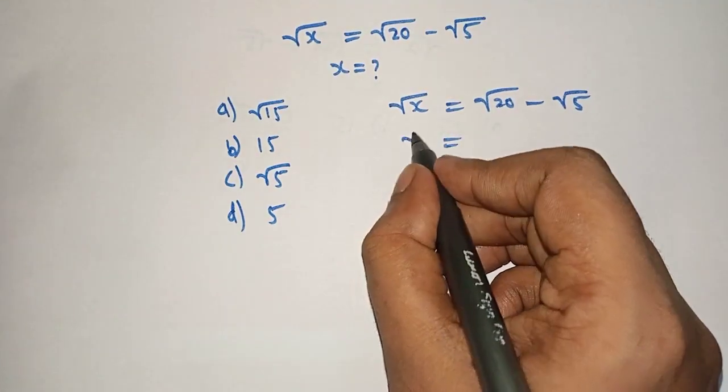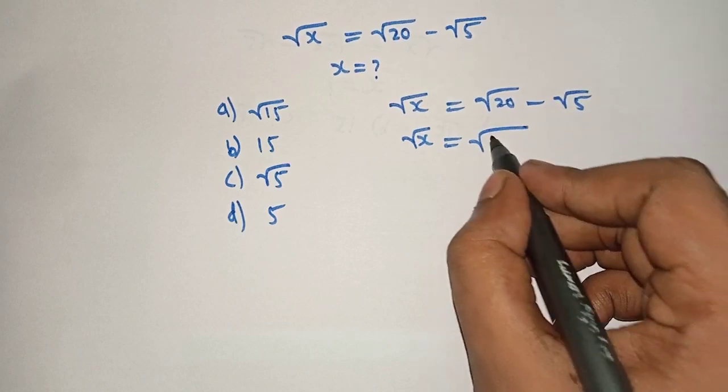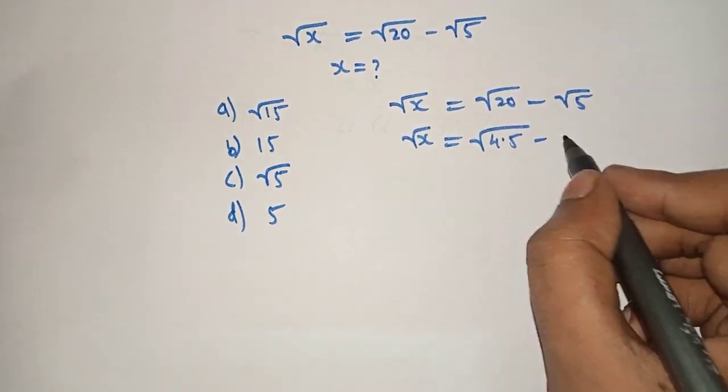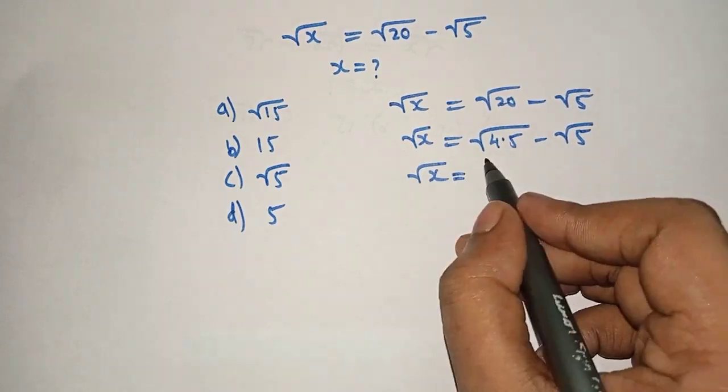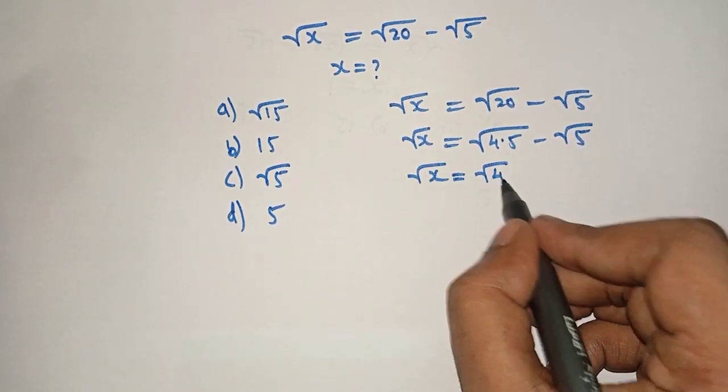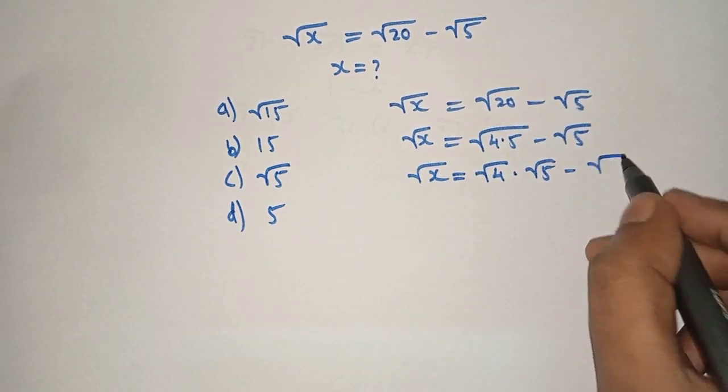Here, square root of x equals, 20 can be written as 4 times 5, minus square root of 5. Here, we will split the root: square root of 4 times square root of 5 minus square root of 5.